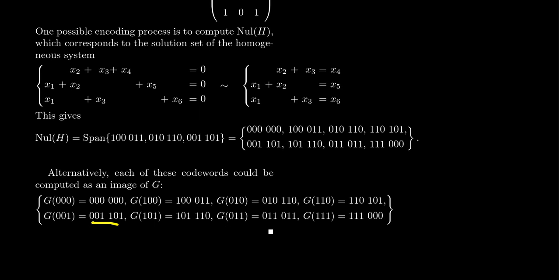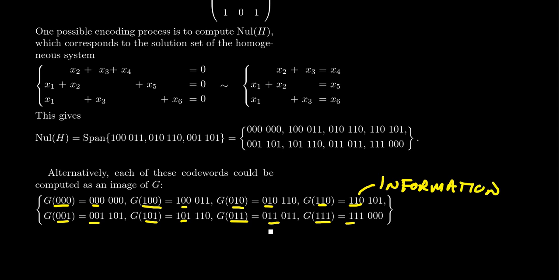Notice that with this construction, the first three bits of every code word are always the original message. This makes decoding easy — if we know the received message is correct, just ignore the last three bits to recover the original. These first bits are called the information bits since they carry the information we actually want to transfer. The remaining bits are the check bits, which are essential in the decoding process.